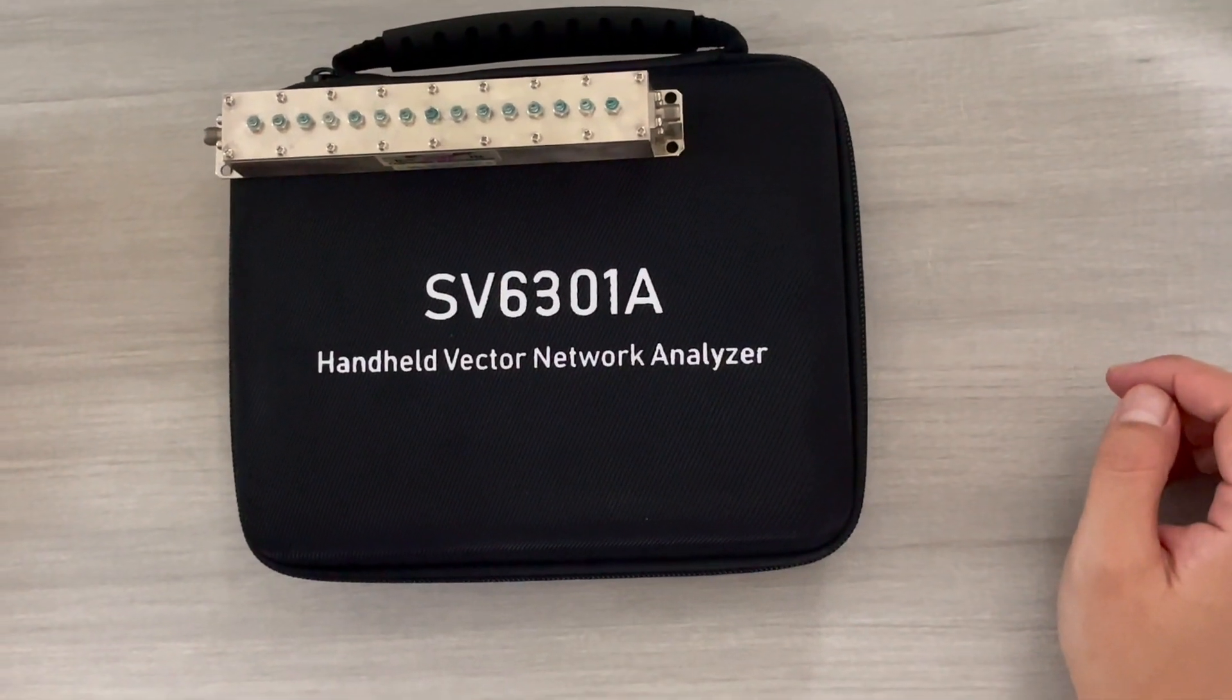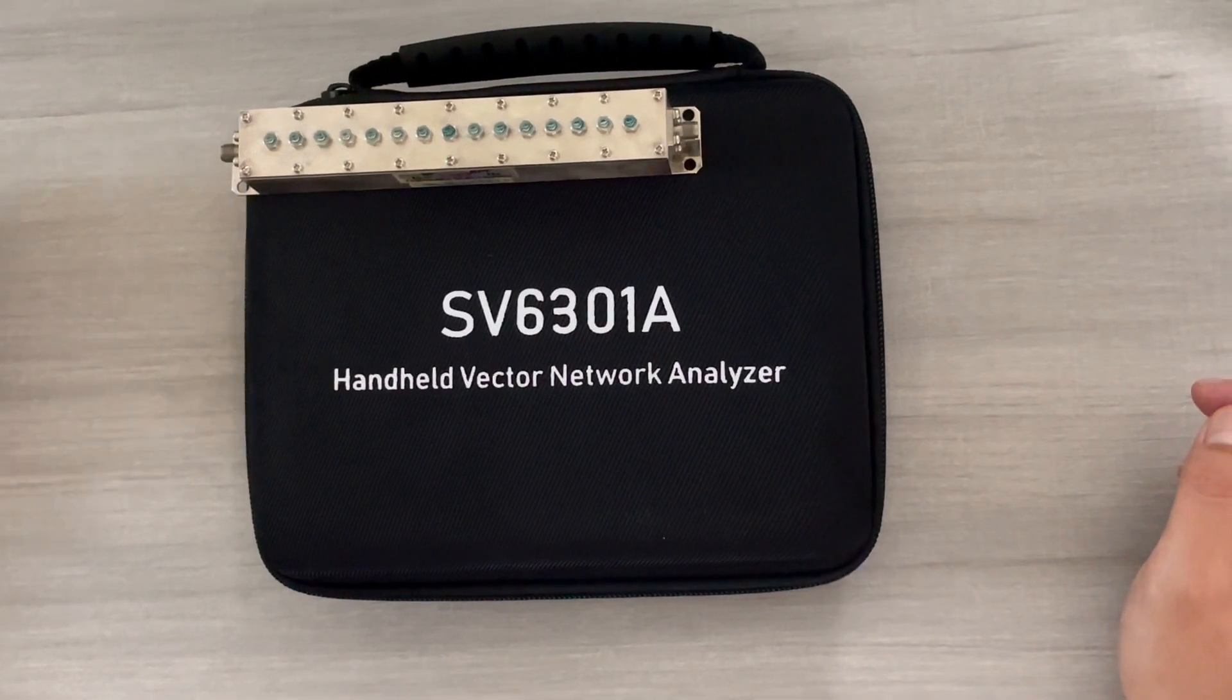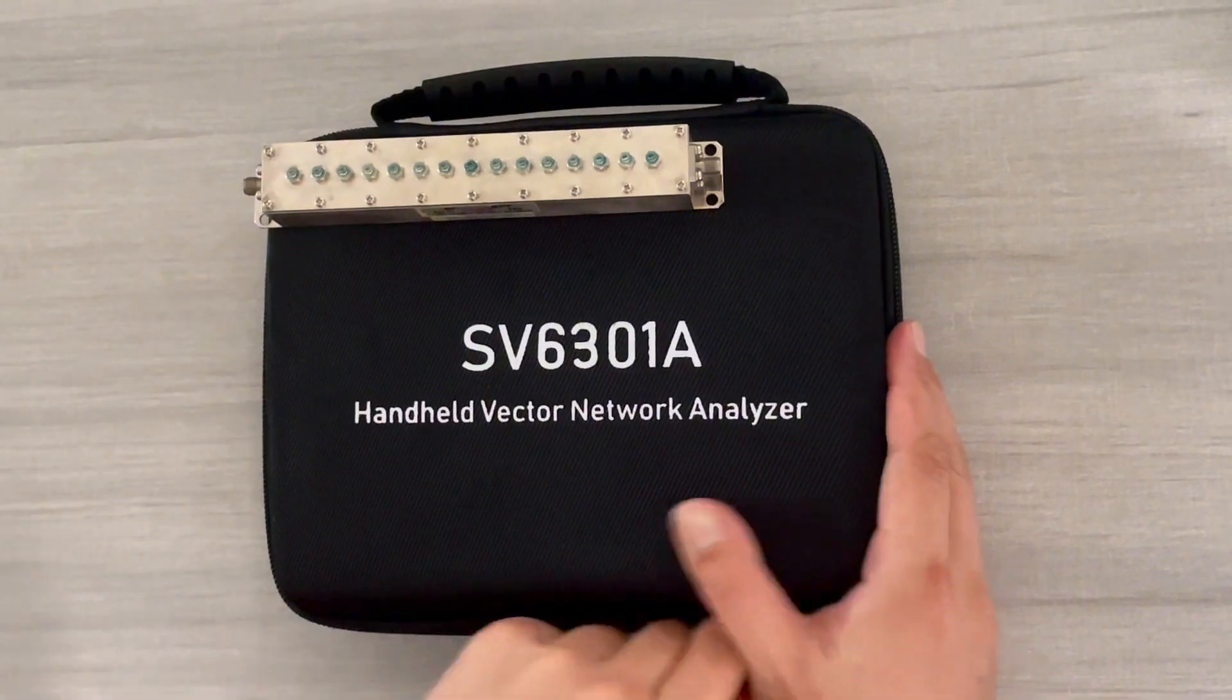Welcome to another Cheligens video. Today we are using our 6 GHz VNA. The device under test will be an unknown frequency band filter. Let's get started.